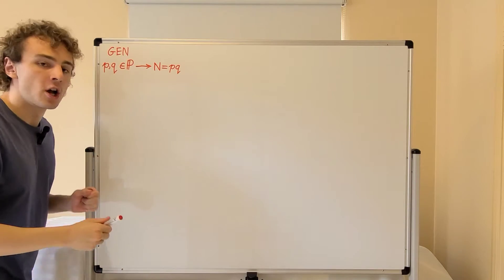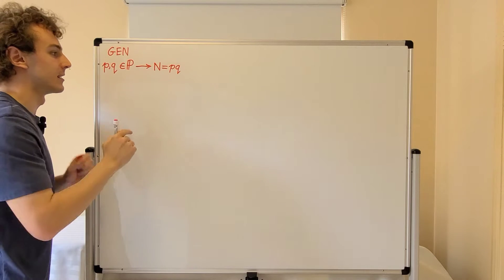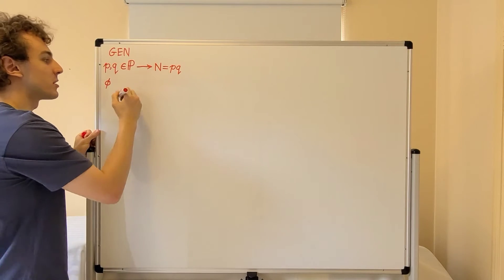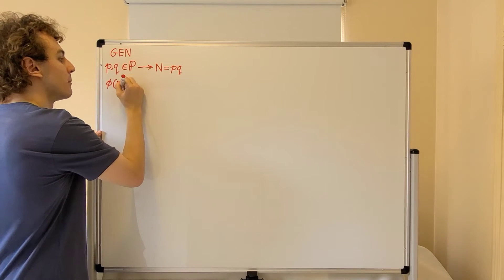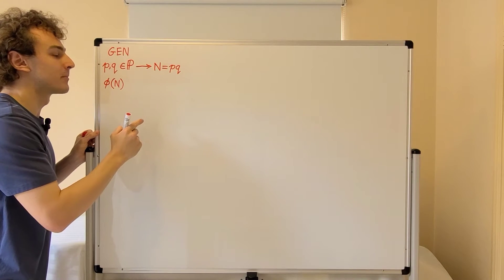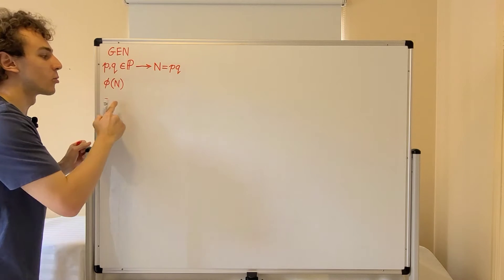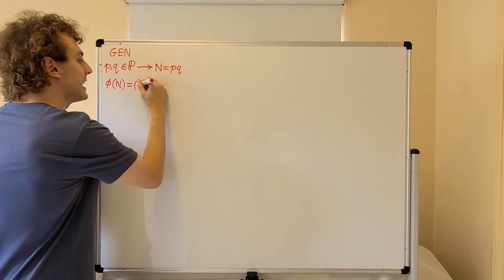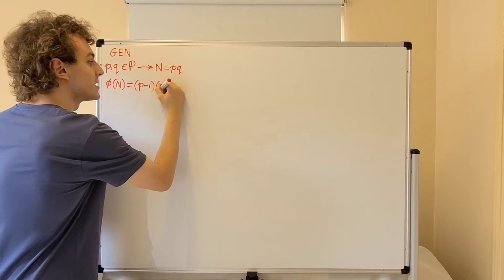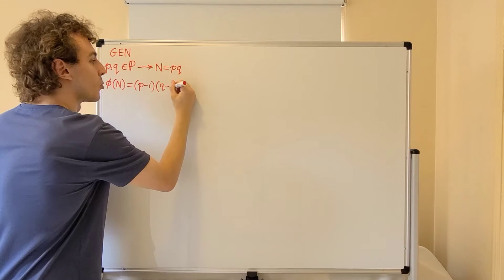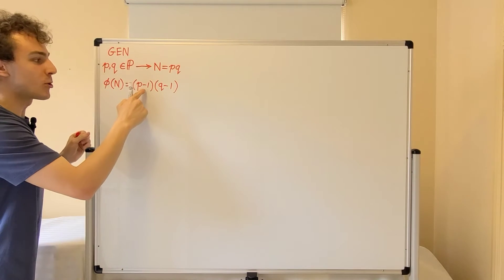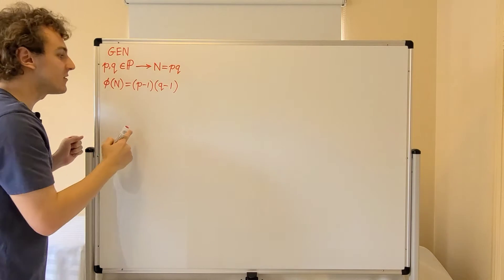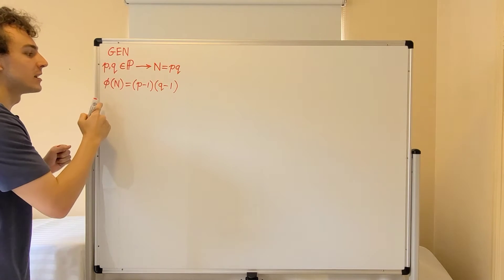Now we're going to compute Euler's totient function for N, which is denoted by phi. So we're going to compute phi of N. Because N is semi-prime, there's a neat expression: we can evaluate this as P minus 1 times Q minus 1. So we subtract 1 from both prime numbers, take the product, and that gives us Euler's totient function of N.